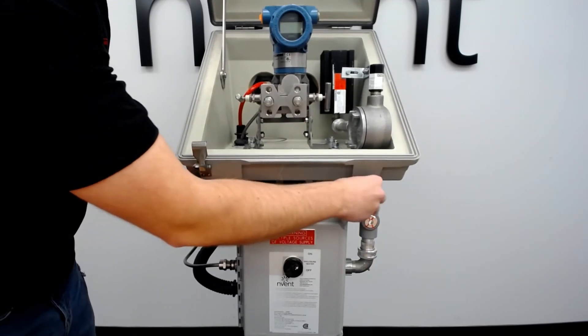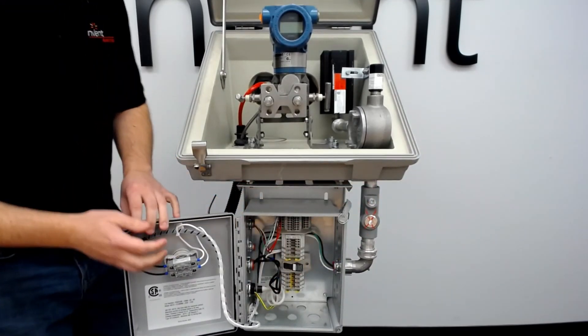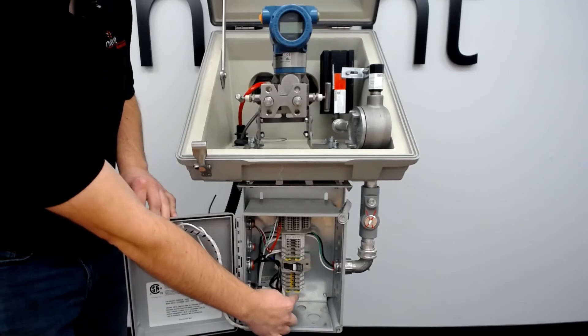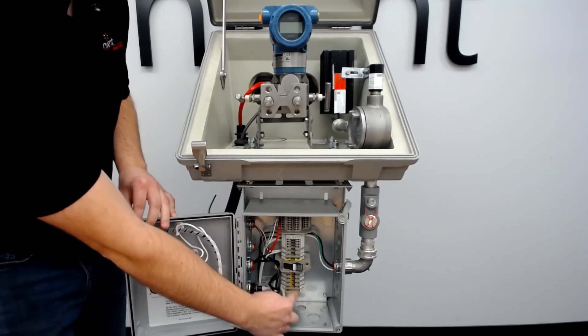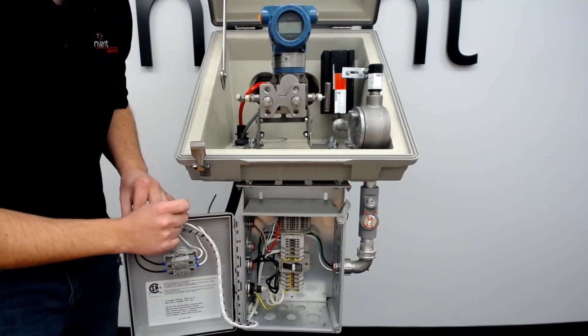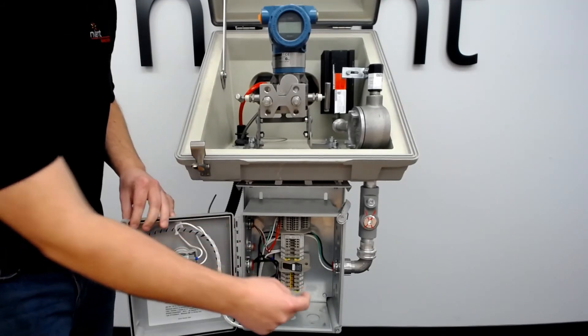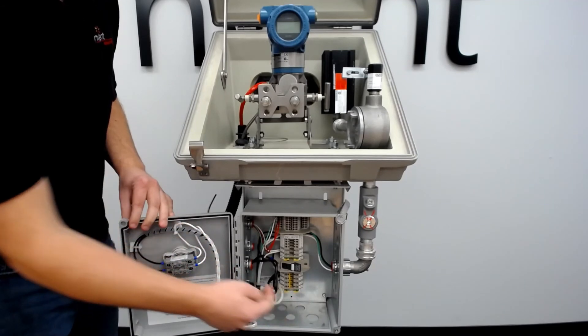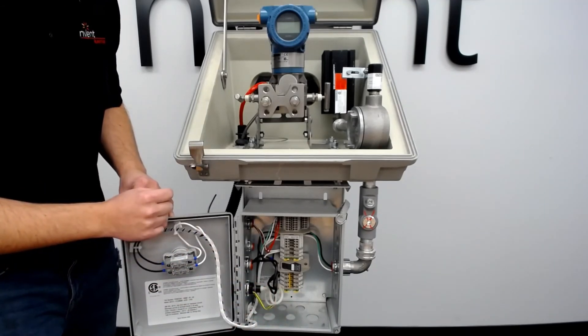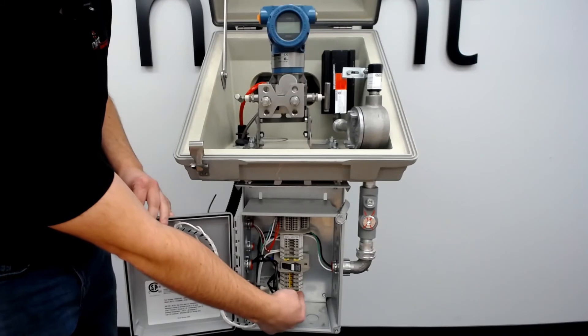Looking inside this junction box, you can see we have terminations for your electric heat trace that are feed-through. Make sure with self-regulating, it does come with the ground, whereas mineral insulated does not, and that you account for the right number of ground terminations inside those heat trace terminations.